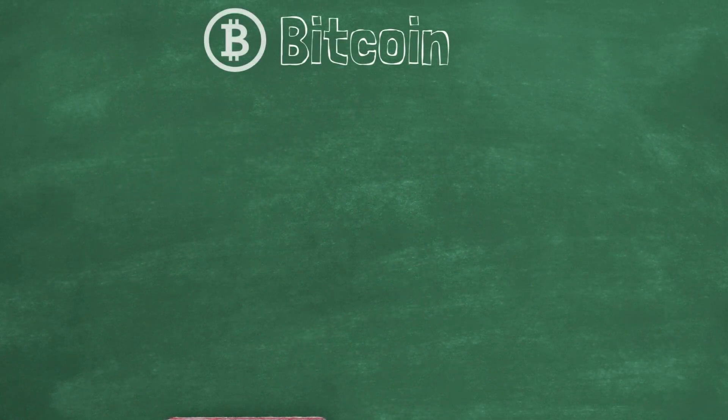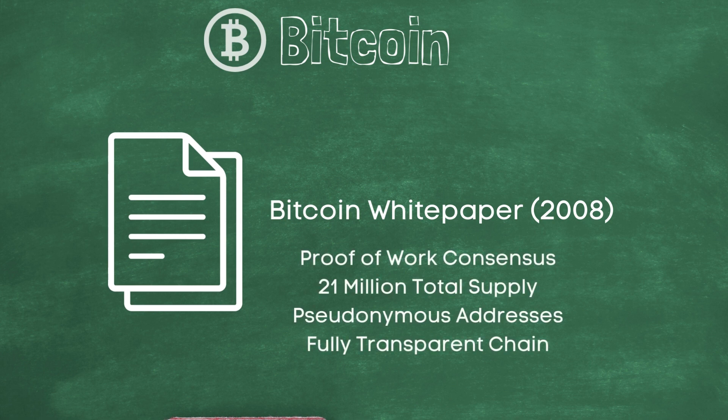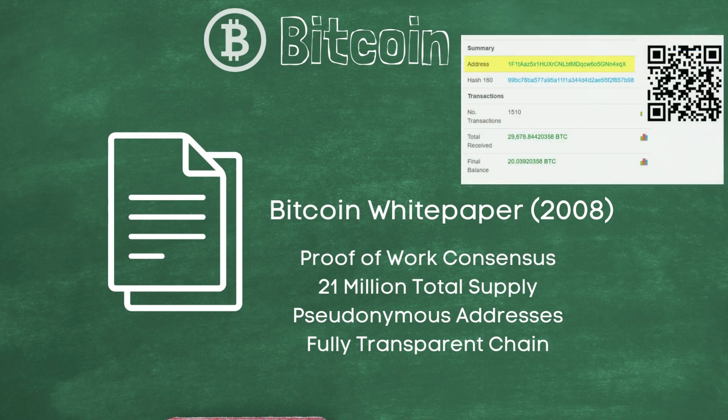It starts with Bitcoin, the first cryptocurrency brought into existence, its whitepaper published in 2008. It had some important characteristics key to its early success: proof of work consensus, its known total supply of 21 million coins, and it also sought to achieve a level of network privacy with its use of pseudonymous addresses.